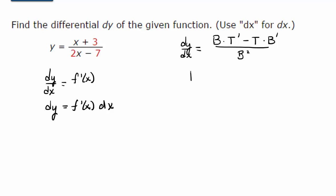In this case, that would give us dy dx equals the bottom, 2x minus 7, times the derivative of the top, but the derivative of x is 1 and 3 is 0. So it's just going to be 1 minus the top, x plus 3,